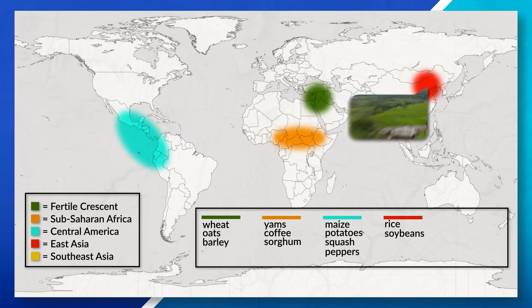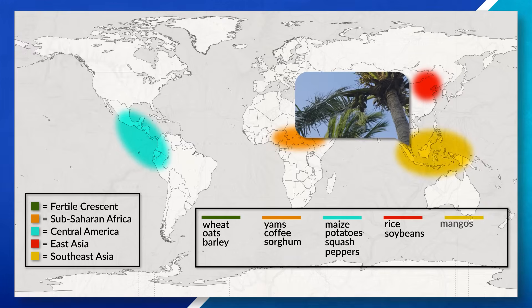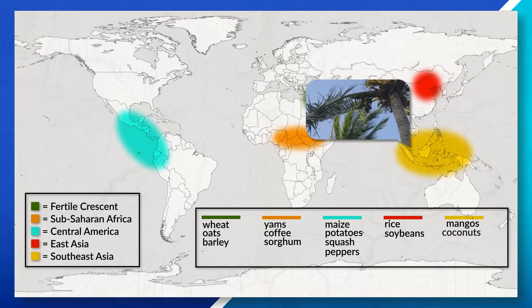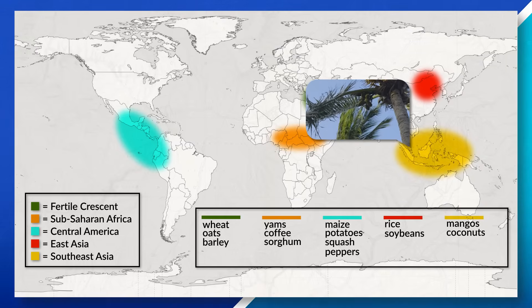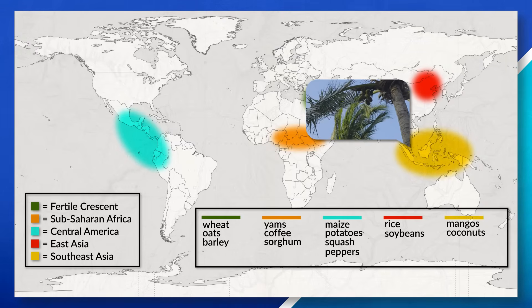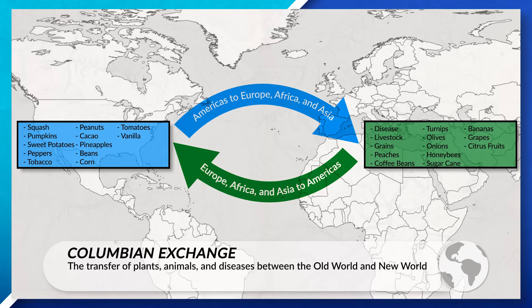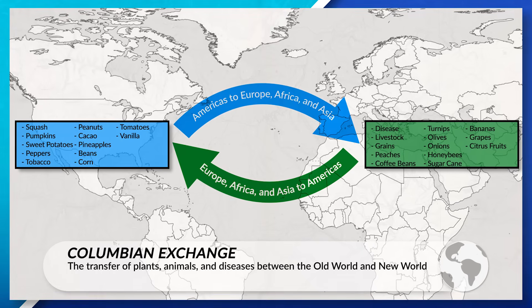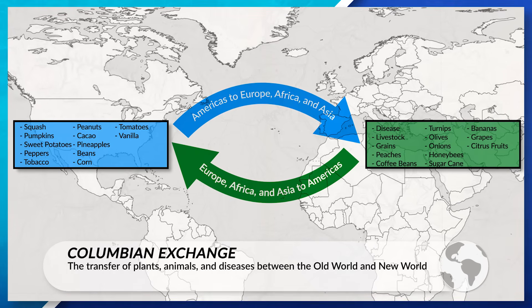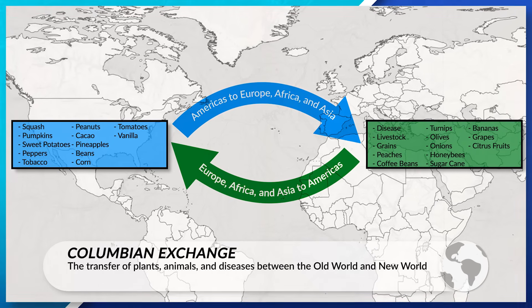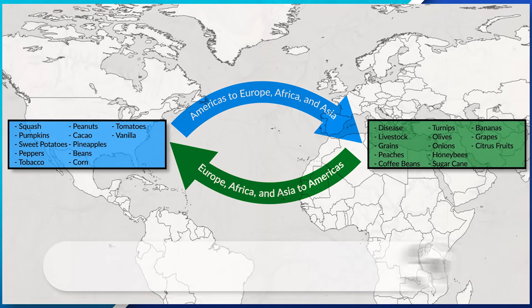Then lastly, we have Southeast Asia, which had crops such as mangoes and coconuts, diffusing through the East Indies and into India. Over time, we saw these crops diffuse throughout the world thanks to events such as the Columbian Exchange, which saw the diffusion of different animals, goods, products, and diseases between the Old World and the New World.